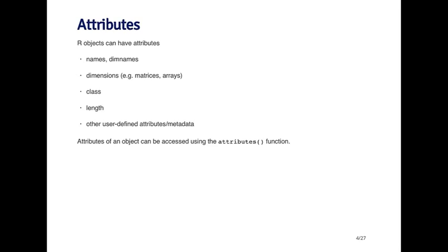The class of the object, so every object will have a class. For example, numeric objects, their class is numeric, and integer objects, their class is integer. Every object also has a length. So for a vector, it's quite simple. The length of the object is just the number of elements in the vector. And then there may be other user-defined attributes or metadata, which are things that you can define separately for an object using various attribute functions. There is a general function called attributes() which allows you to set or modify the attributes for an R object.